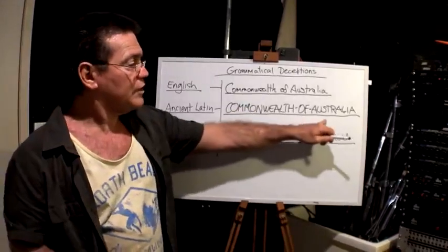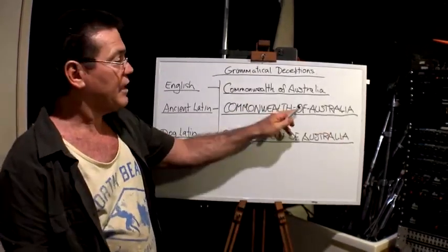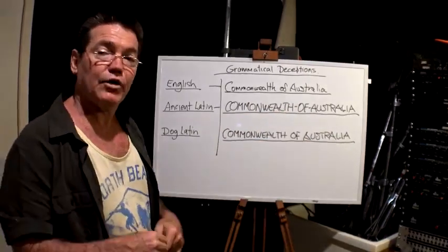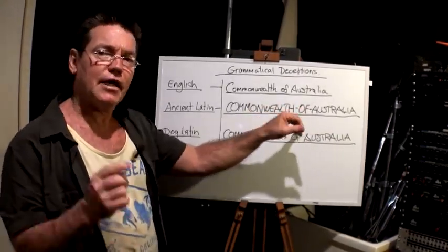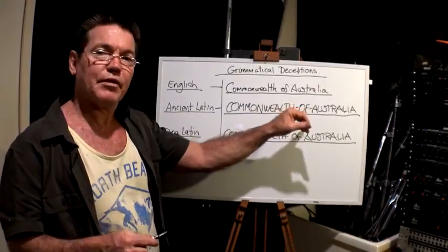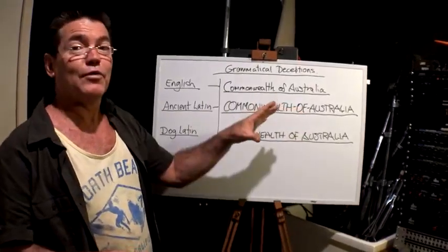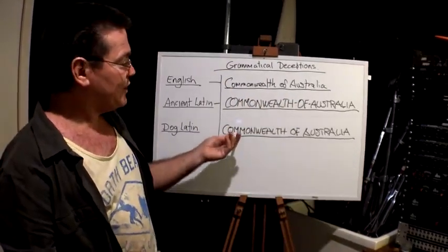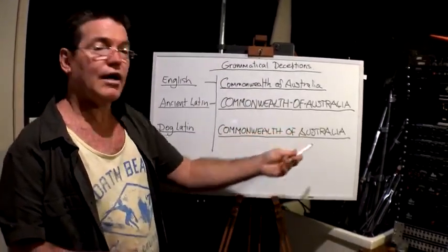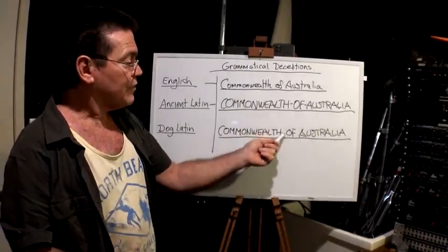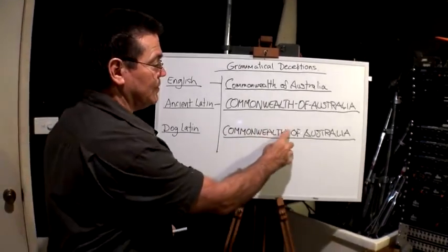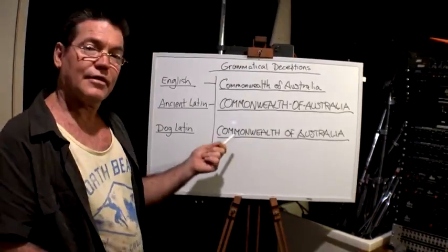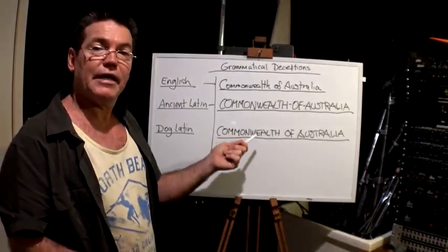You know something's wrong with that. If you saw that written everywhere and you saw a hyphen in between the words, even if you didn't know your Latin and your grammar, you would instantly know that doesn't look right — there's something wrong with that. But it is another language. When you read 'Commonwealth of Australia' without the hyphens, you will assume that to be English.